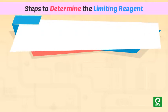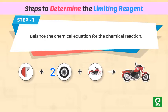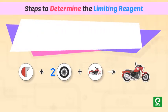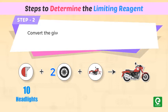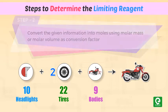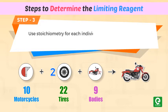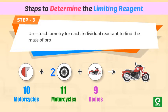In chemical reactions, we use stoichiometry to determine the limiting reagent. Step one: balance the chemical equation for the reaction. Step two: convert the given information into moles using molar mass or molar volume as a conversion factor. Step three: use stoichiometry for each individual reactant to find the mass of product produced.